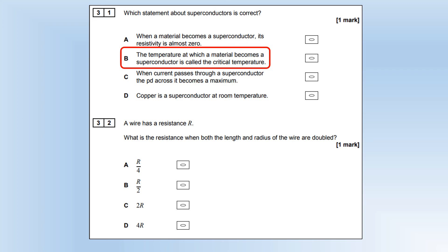Wire has resistance R. What is the resistance when both the length and radius are doubled? If you double the radius, you make the area times by 4, which has the effect of dividing the resistance by 4. However, doubling the length doubles the resistance, so we get left with resistance divided by 2.